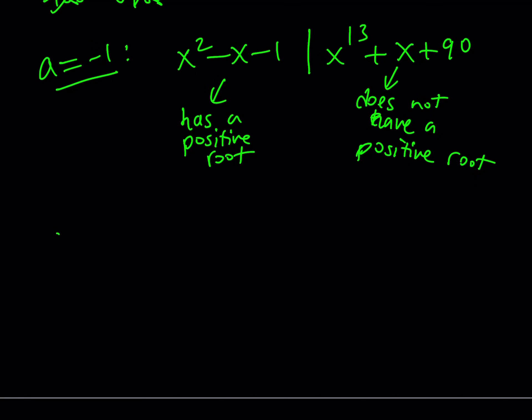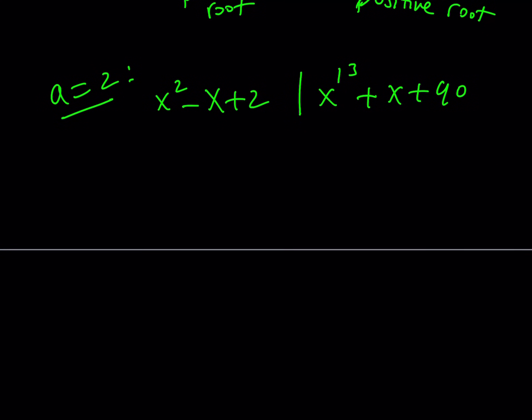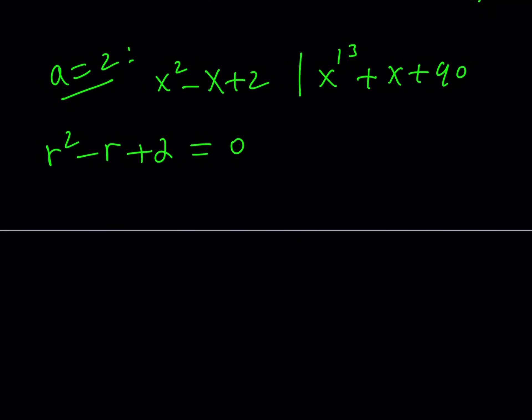So let's look at the second possibility, a equals 2. We're claiming that x squared minus x plus 2 divides x to the power 13 plus x plus 90. Since this is the only a value we're left with, it should work, but let's verify. Suppose r is a root of x squared minus x plus 2, so r squared minus r plus 2 equals 0. From here I'm going to show that this polynomial divides the second one. This implies r squared equals r minus 2, and that's the equation I'll be using throughout.